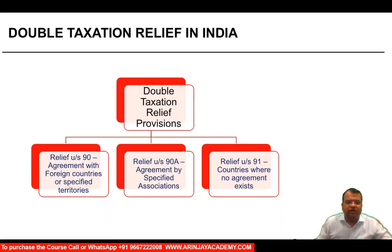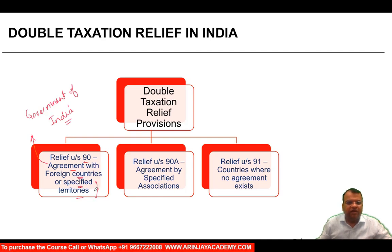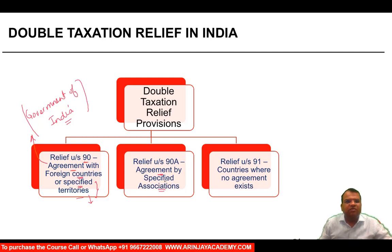Now, double taxation relief in India is found in three ways. Section 90 provides relief in respect of agreements with foreign countries or specified territories, where the government of India has an agreement with a foreign country or specified territory. Second, there are certain agreements by specified associations in India with some specified associations outside India, and the relief in respect of them is given under Section 90A.